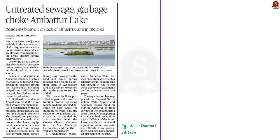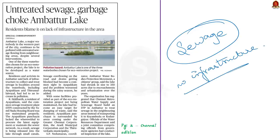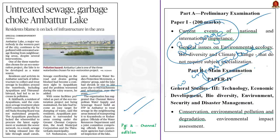This article says that Ambatur Lake, a major water body in Chennai, continues to be polluted with untreated sewage from neighboring areas. Lack of infrastructure to collect and treat sewage has led to an increase in pollution. According to the citizens group — the Ambatur Water Bodies Protection Movement — the lake had shrunk to 350 acres due to encroachment and urbanization. In this context, let us learn about wastewater generation in India and its management. The syllabus relevant to this article is highlighted on screen for your reference.